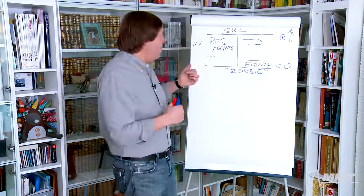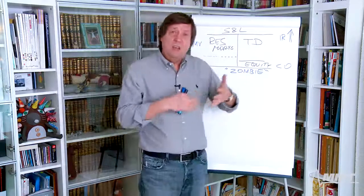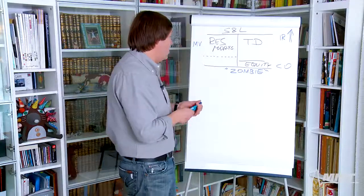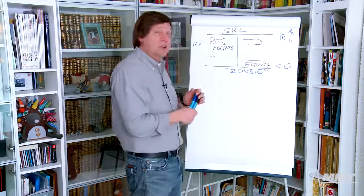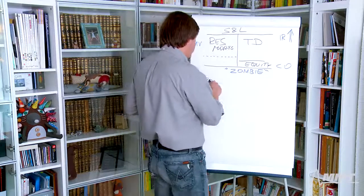And the question is how come that an institution that is actually insolvent can keep on going? And here we come to the point of how regulation of these S&Ls was arranged before. The key story was the so-called book value reporting.